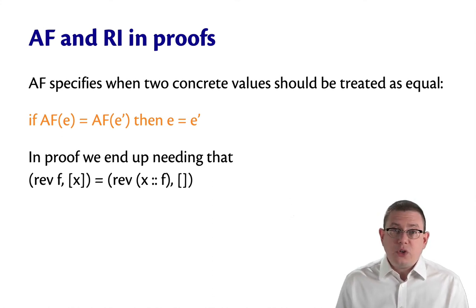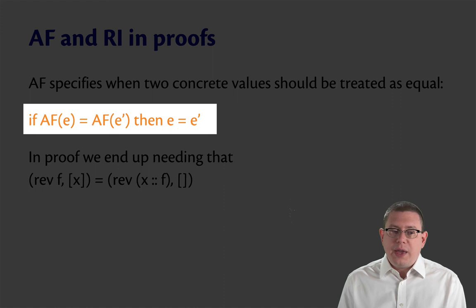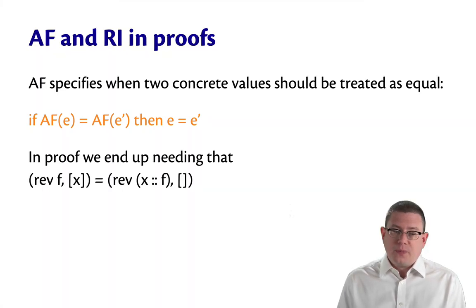We end up introducing a new notion of equality. Well, not a new one, augmenting our existing notion of equality to say that if the abstraction function applied to two expressions is equal, then the two expressions, we can treat them as equal in our equational proofs. That lets us establish that these two queues really do represent the same thing and thereby prove the correctness of the implementation of two-list queues according to our queue specification.